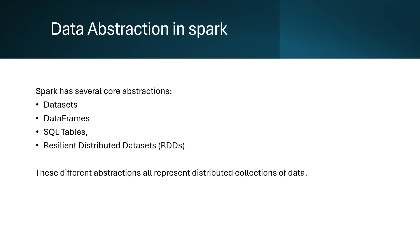When we talk about data abstraction in Spark, we keep hearing about two very common things: DataFrames and RDDs. But there are several abstractions of data in Spark — Dataset, DataFrame, SQL tables, and RDDs — all representing a distributed collection of data. Some are low-level, some are high-level abstractions. RDD is a low-level abstraction, whereas Dataset and DataFrames are high-level abstractions, but all of them are nothing but distributed collections of data, like wrappers over the data.